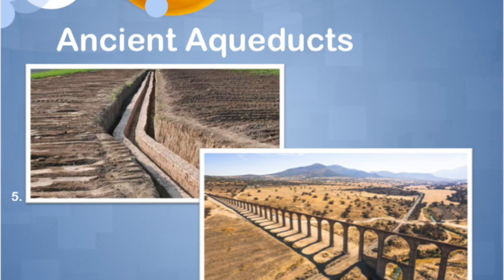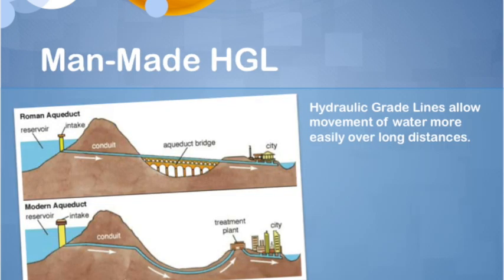Hydraulic grade lines are graphs that describe how liquids move from one point to another. They can be above the earth or beneath the earth. Hydraulic grade lines are used in many cases and combined with many other ideas. I hope you all better understand what a hydraulic grade line is. Thank you for listening.